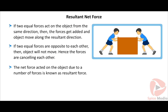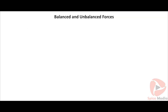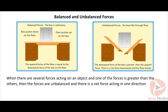The net force acted on the object due to a number of forces is known as resultant force. How to recognize the presence of a net force? When there are several forces acting on an object and one of the forces is greater than the others, then the forces are unbalanced and there is a net force acting in one direction. Thus, net force is the vector sum of all the forces acting on a body simultaneously. If the forces are unbalanced or there is a net force on the objects, then it experiences a change in velocity or acceleration.